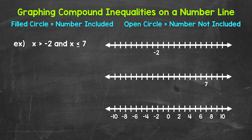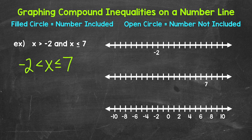All we need to do is start with our variable x, and our variable is going to go in the middle. So x is greater than negative 2 AND x is less than or equal to 7 — that's our compound inequality written without the word AND. We can read this starting with the variable: x is greater than negative 2 AND less than or equal to 7. So whenever you see a compound inequality written like this, it's a compound inequality involving AND.